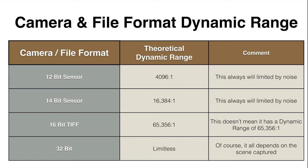Here's a little table. A 12-bit sensor has a theoretical dynamic range of 4,096 to 1 — this will always be limited by noise. 14-bit sensors have 16,384 to 1 — again, there will always be some noise. A 16-bit TIFF can show 65,536 to 1 ratio of dynamic range, but as I said, that doesn't mean it has that dynamic range. A 32-bit image, which is an HDR image, is limitless — of course it all depends on the scene captured.